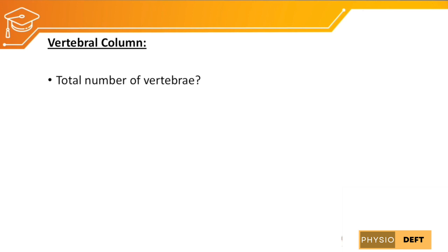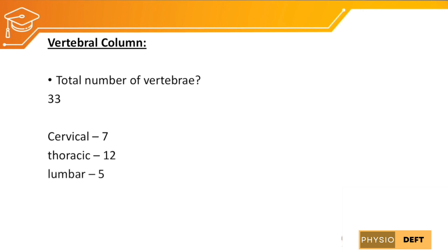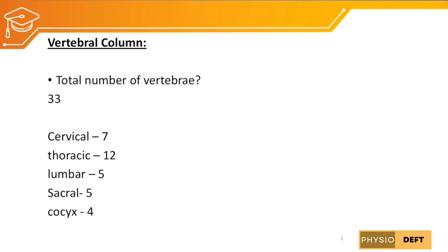We have 33 vertebrae in our body: 7 vertebrae are in the cervical region, called cervical vertebrae; 12 thoracic vertebrae; 5 lumbar vertebrae; 5 sacrums; and 4 coccyx.